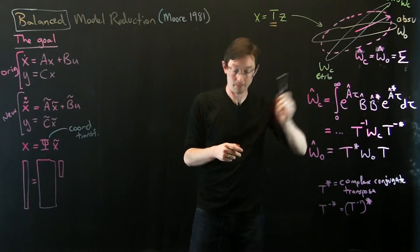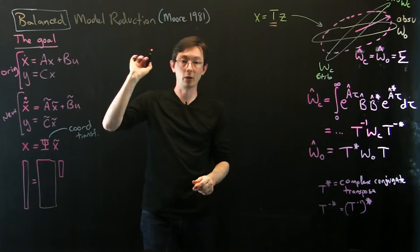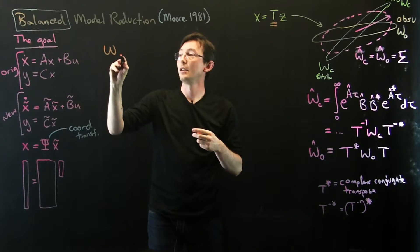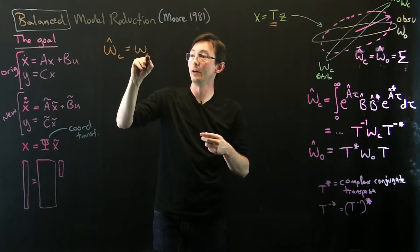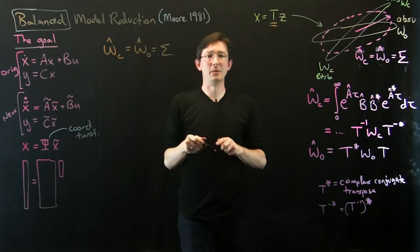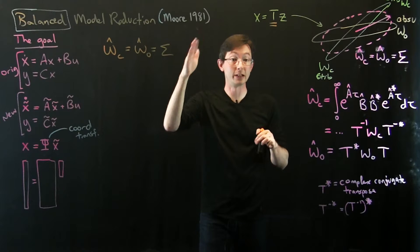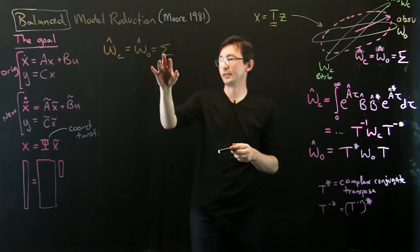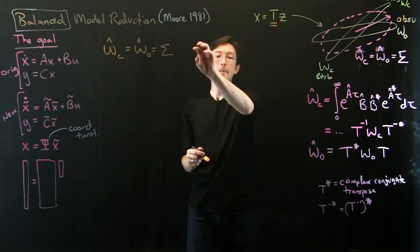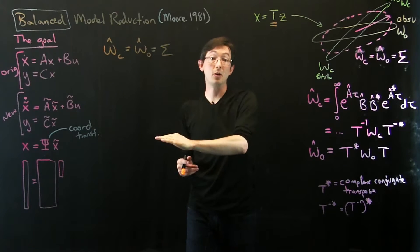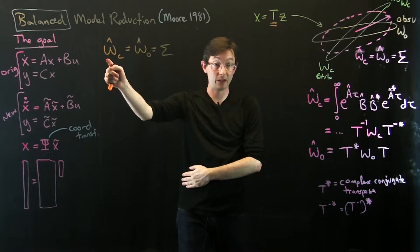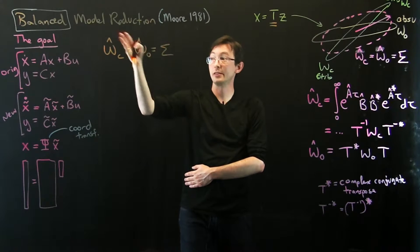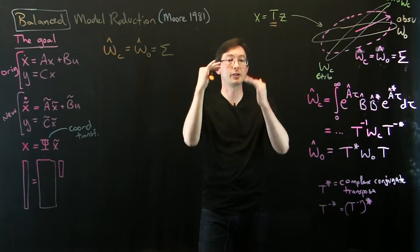What we're going to do right now is find the coordinate transformation T so that in those transformed coordinates my new Gramians satisfy wc_hat equals wo_hat equals sigma. Sigma is my go-to notation for a diagonal matrix — related to singular value decomposition — and its entries go from biggest to smallest. So the first column of wc_hat is the most controllable and observable direction, the second column is the second most, and so on.